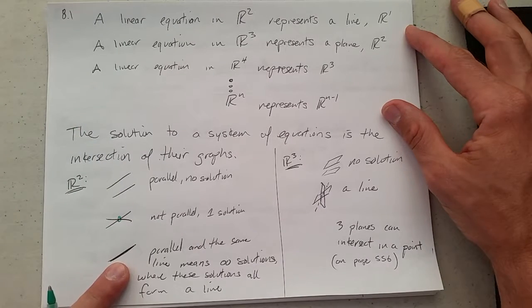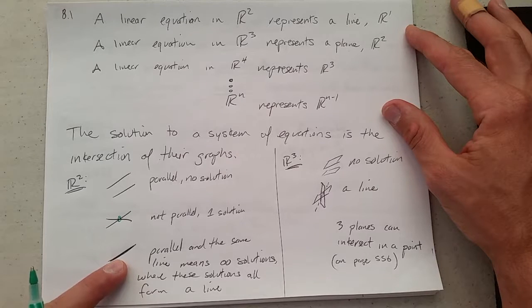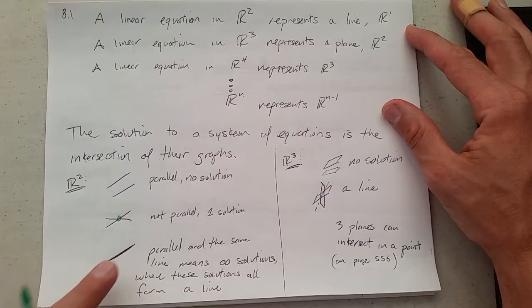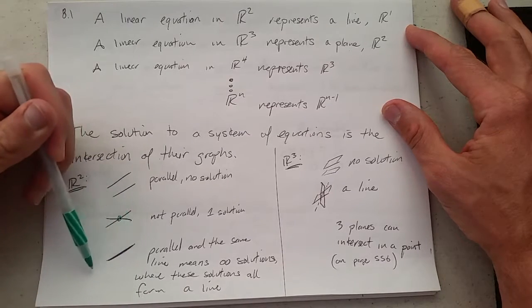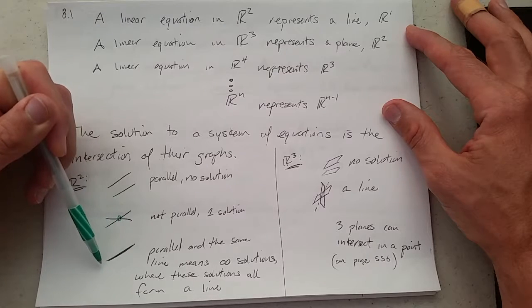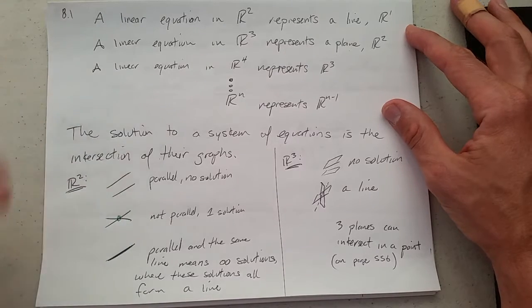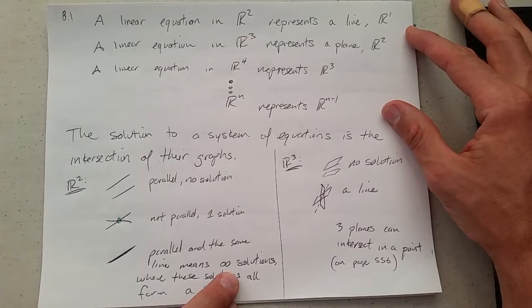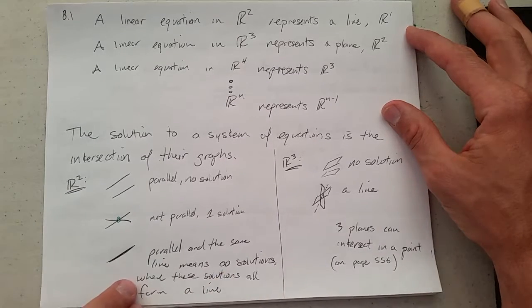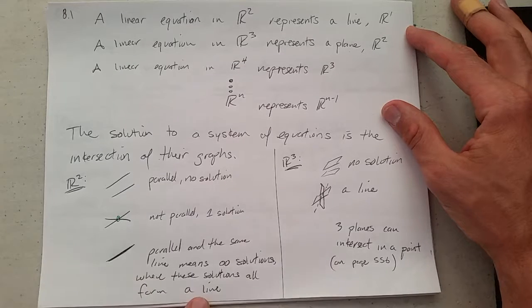If they're parallel, they could be the same line. If they're parallel and they have one point in common, they have every point in common. The solution is they're the exact same line. When you intersect a line with itself, you get the line. So if they're parallel and the same line, we call this infinite solutions.